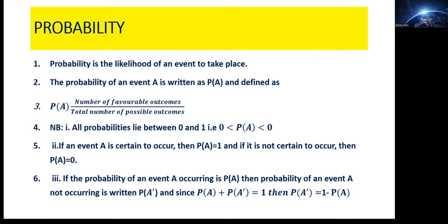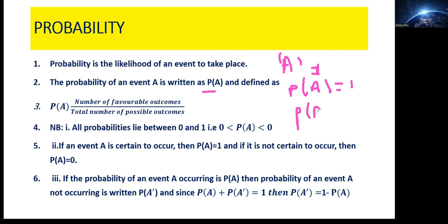Now, how do you denote the probability of an event in notation? For example, the probability that a woman who has been carrying a child for nine months will deliver in that ninth month — we would say the probability is one because we are certain she's likely to deliver. The notation is: probability of event A taking place equals one if we are certain, and probability of event B equals zero if it's unlikely to happen.